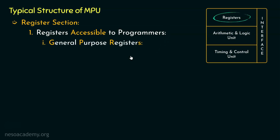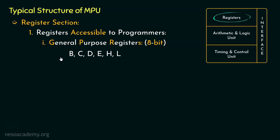At first we have the GPRs or the general purpose registers. These are of 8 bits and they are B, C, D, E, H and L. Individually they can be used as 8-bit data storage and the programmers can use these for general purpose.